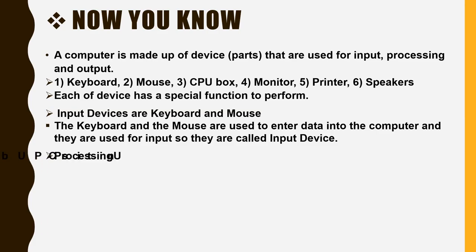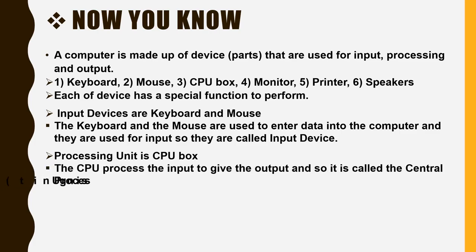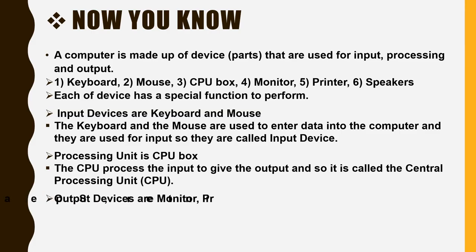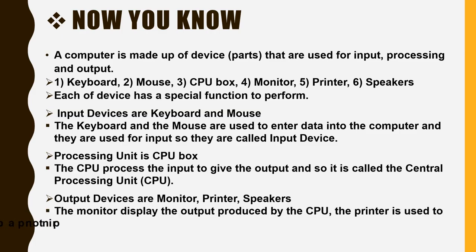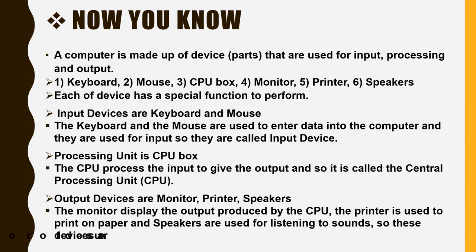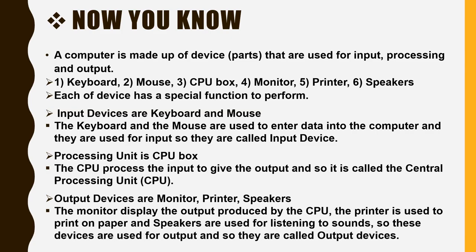Now you know: A computer is made up of devices and parts used for input, processing, and output — keyboard, mouse, CPU box, monitor, printer, and speakers. Each of these devices has a special function to perform. Input devices are keyboard and mouse, used to enter data into the computer. The processing unit is the CPU box — the CPU processes the input to give the output. Output devices are monitor, printer, and speakers. The monitor displays the output, the printer prints on paper, and speakers are used for listening to sounds. So these devices are called output devices.